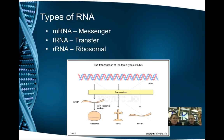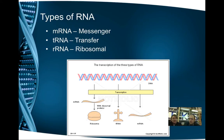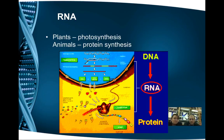Messenger RNA looks like half of a DNA strand — like one side of the ladder, a long strand. Transfer RNA looks like a gigantic cloverleaf — it's basically one of those messenger RNAs bent into a cloverleaf shape. Ribosomal RNA is this gigantic blob on the ribosome that moves around and does its job. In animals, we call this process protein synthesis because we're made of proteins. In plants, this is part of photosynthesis.